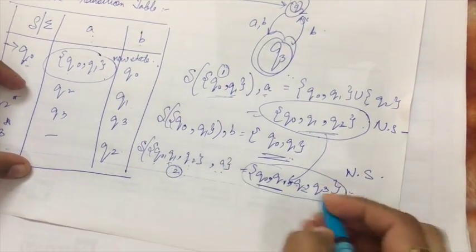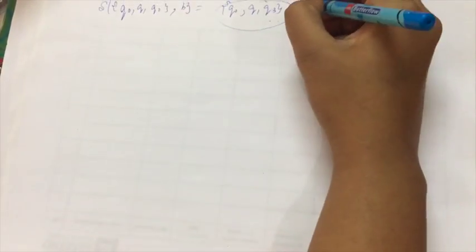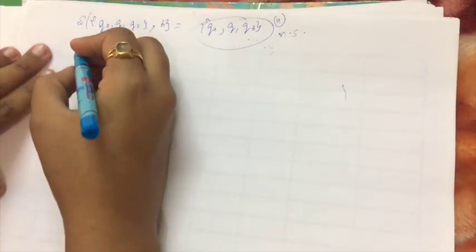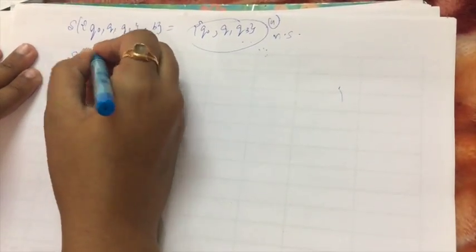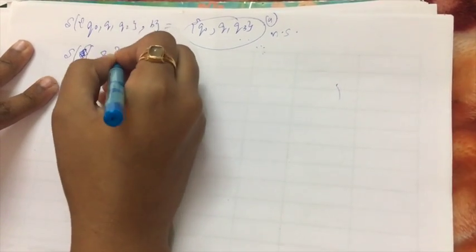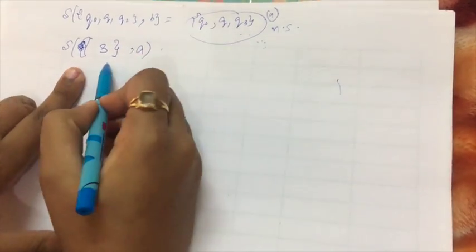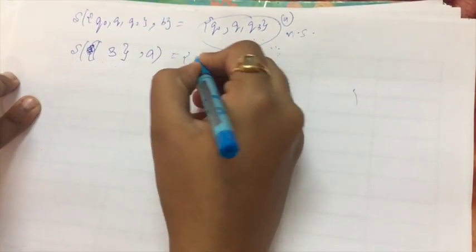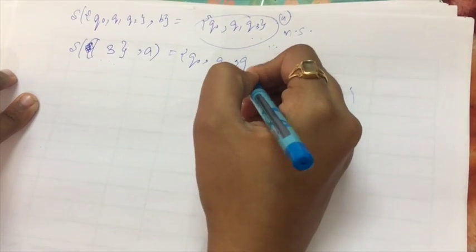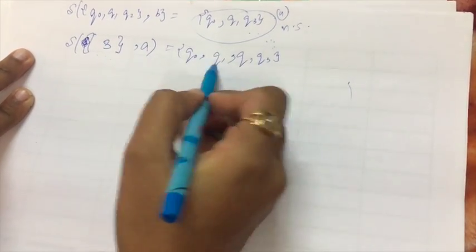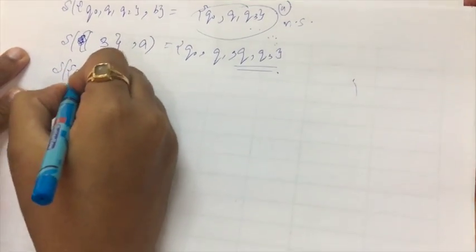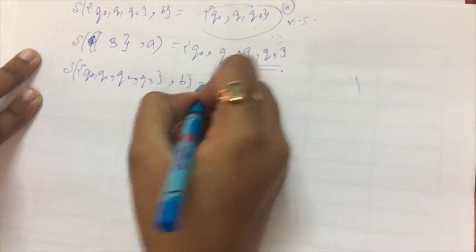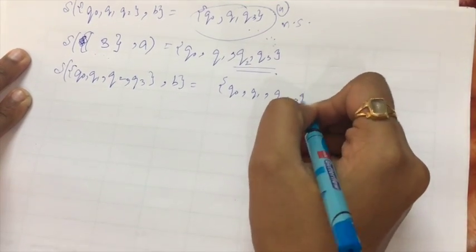We now have a second, third, and fourth new state. For the third new state {Q0, Q1, Q2, Q3}, the transition with A gives {Q0, Q1, Q2, Q3} — the state itself, so no new state. The transition of {Q0, Q1, Q2, Q3} with B gives {Q0, Q1, Q3, Q2}, which is again the same state.